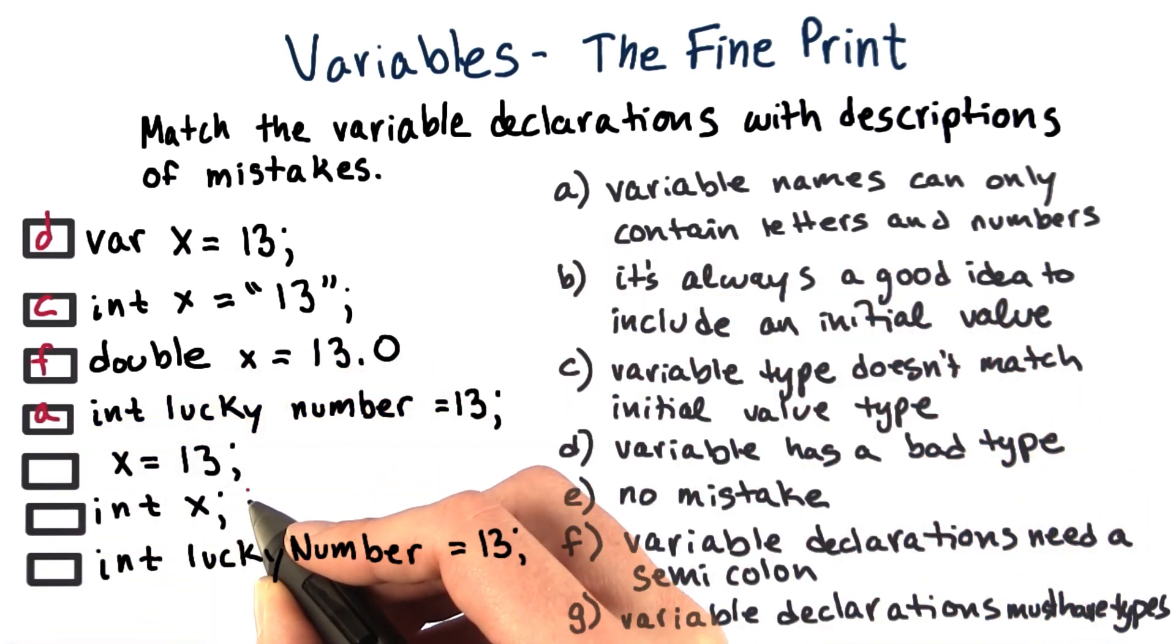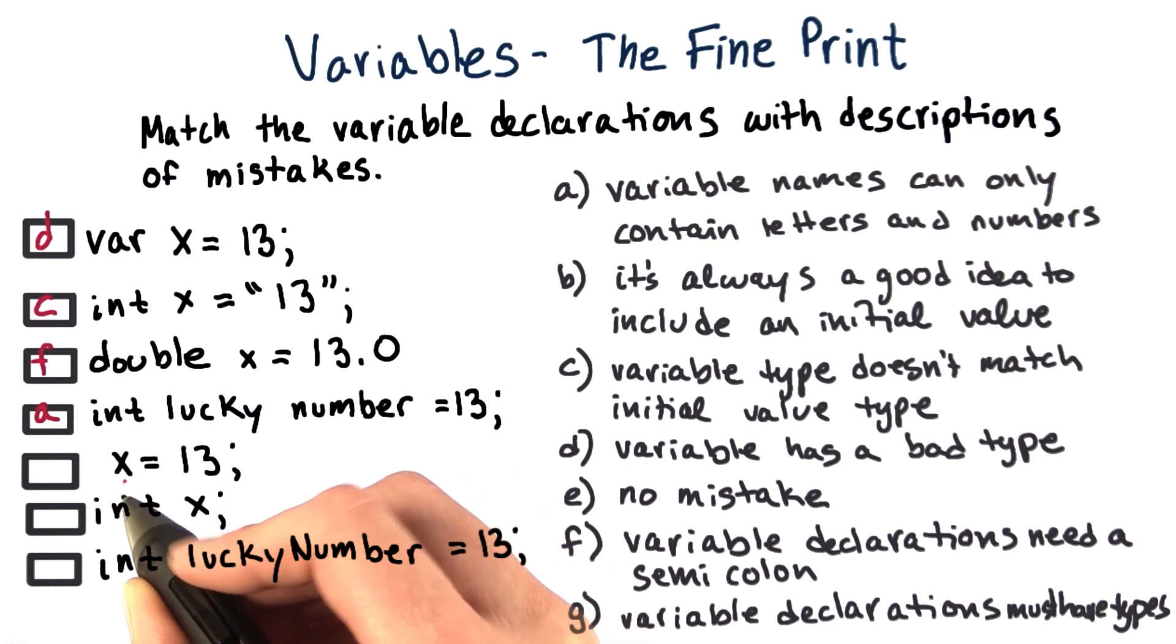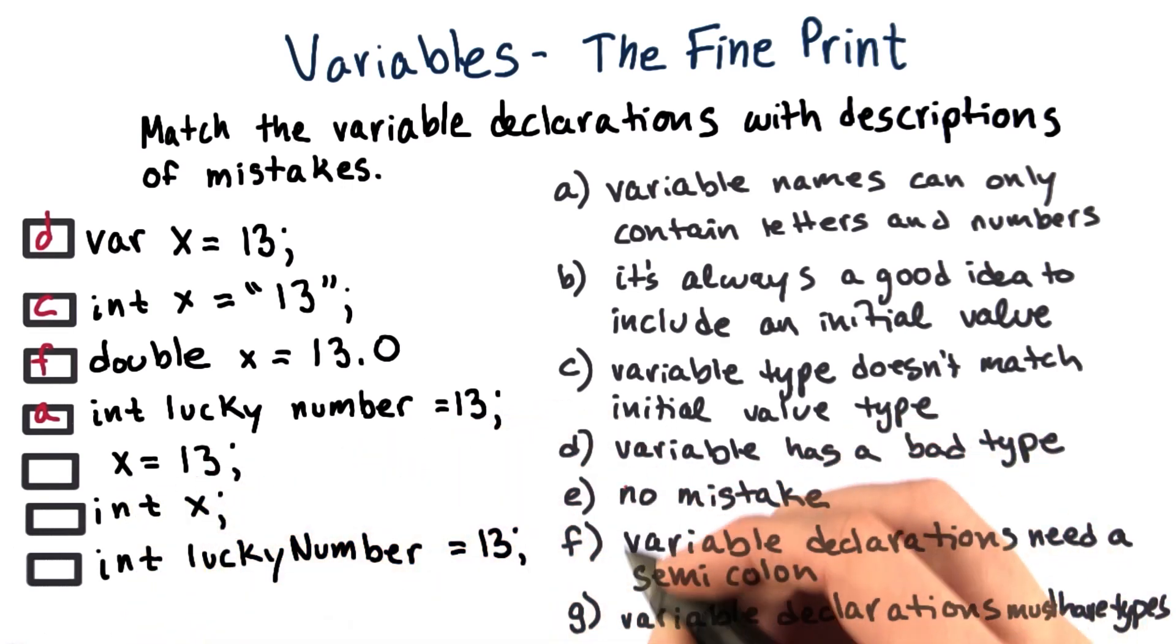X equals 13. Well, we don't know if this is right or not, because we don't know if x is actually an int. The answer is G, variable declarations must have types.